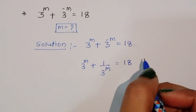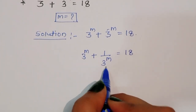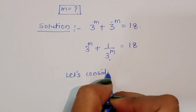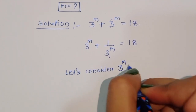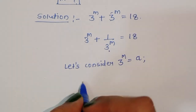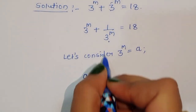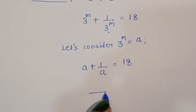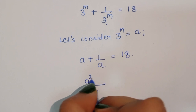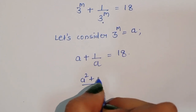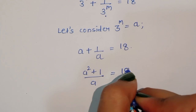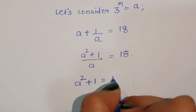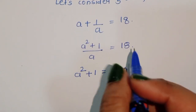Now let's consider 3 power m is equal to a. So we have a plus 1 upon a is equal to 18. Taking LCM here, we multiply through to get a squared plus 1 over a equals 18. Cancelling a from the denominator, we get a squared plus 1 is equal to 18a.